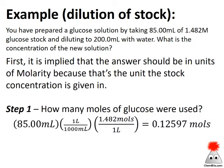Step one: let's figure out how many moles of glucose we have in this small amount of stock solution. So 85 milliliters, convert that over to liters times concentration moles per liter, and we get to moles. Make sure your units cancel out.